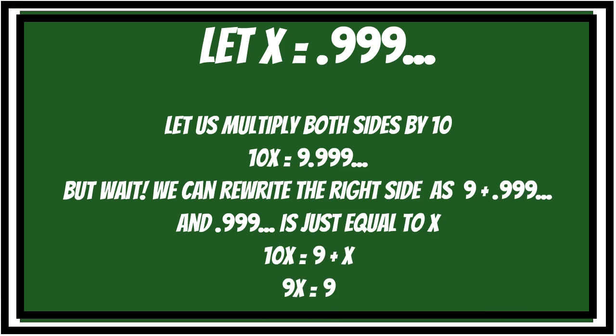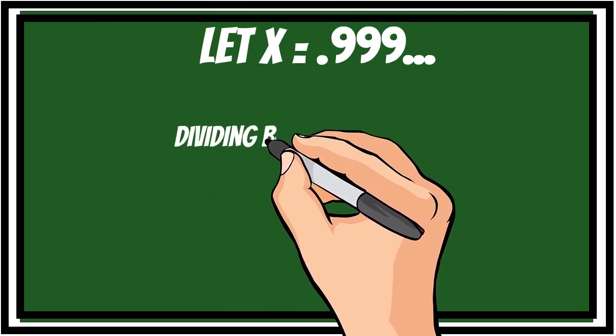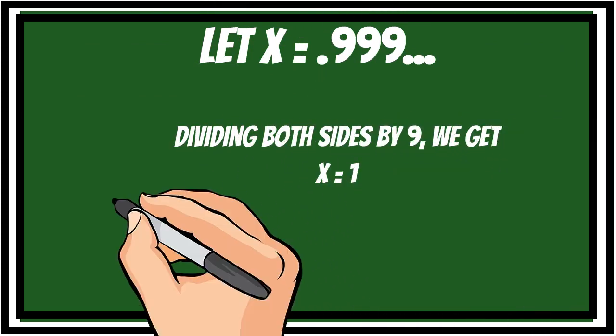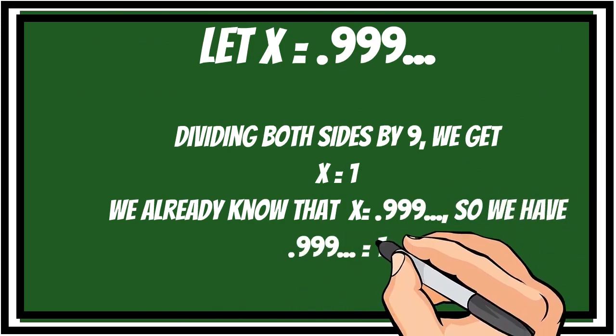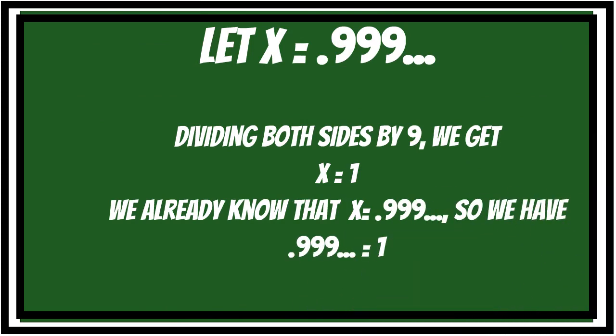So now we have 10x is equal to 9 plus x, which further simplifies to 9x is equal to 9. Dividing both sides by 9, we get x is equal to 1. We already know that x is equal to 0.9 recurring. So we have 0.9 recurring is equal to 1.